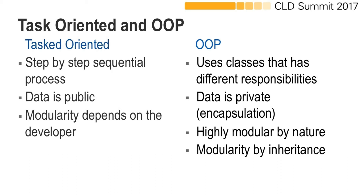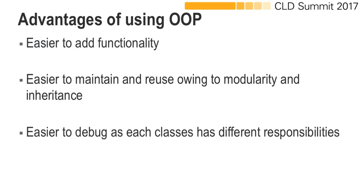Modularity is also achieved by inheritance. The advantages of using object-oriented programming over the task-based approach are that you can easily add functionality or new features into the application. It is easier to maintain and reuse owing to modularity and inheritance, and it is also easier to debug each class because each has different responsibilities.